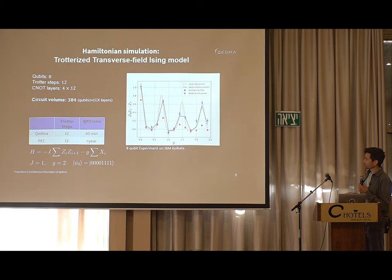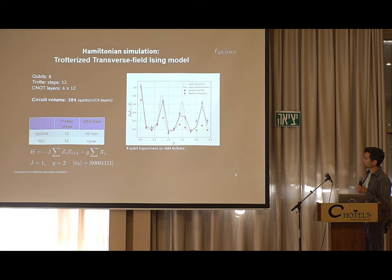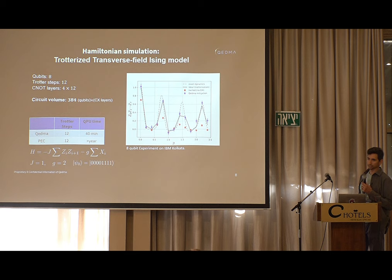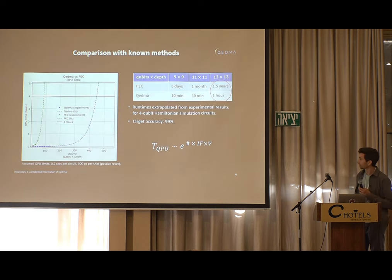This experiment is slightly smaller than the previous one, even though it's on more qubits. It took about 40 minutes of QPU time — accounting for all QPU time, wall time, and total job time, not neglecting anything. If we compared this to an unbiased error mitigation method like PEC, which we've heard about today, that would take over a year, making it infeasible.